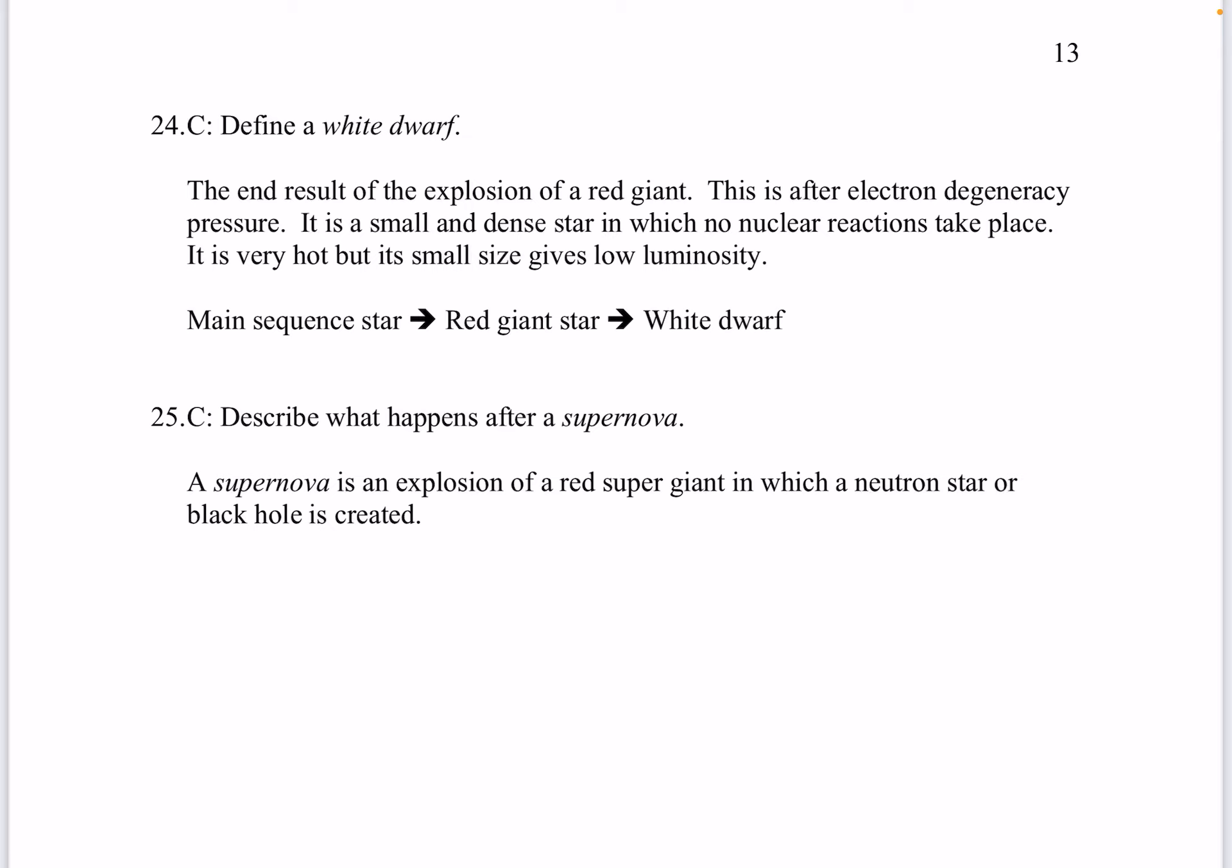Question 25. Describe what happens after a supernova. A supernova is an explosion of a red supergiant in which a neutron star or black hole is created.